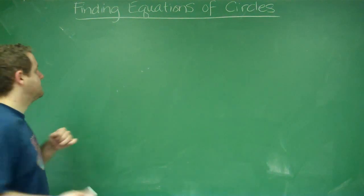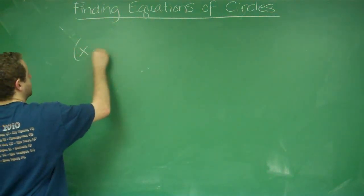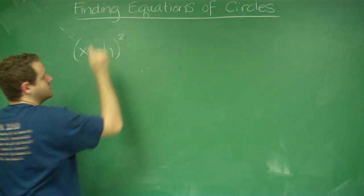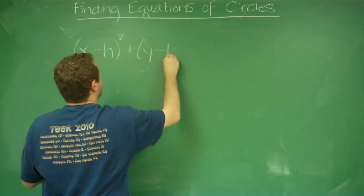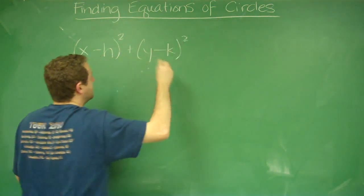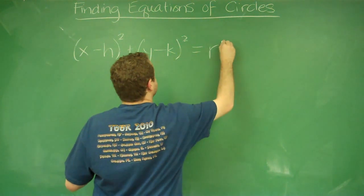So, in general, the equation of a circle looks like this. x minus h squared plus y minus k squared equals r squared.